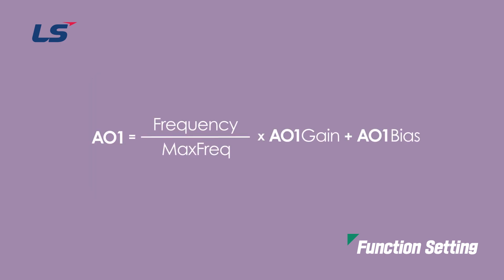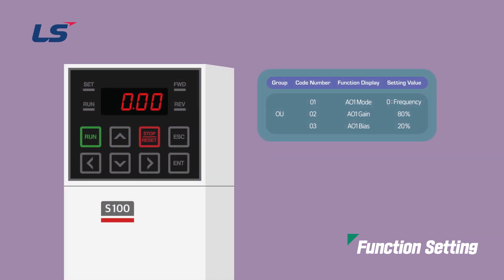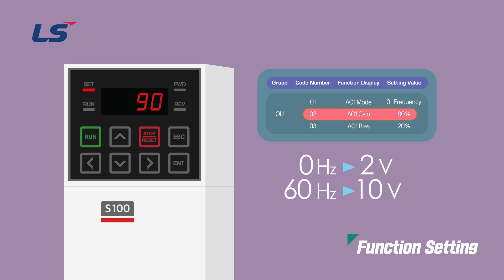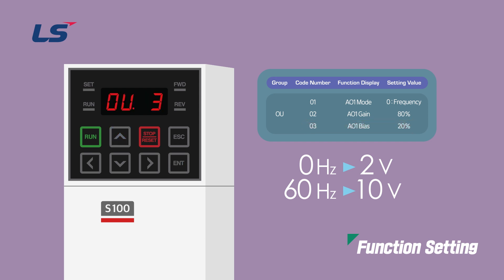Gain and bias are reflected in the output according to the formula shown on the screen. Next, we will learn how to monitor the current frequency through 2 to 10 volts output using the keypad. We will set it to output 2 volts at 0 Hz and 10 volts at 60 Hz. First, move to the OU group. Set frequency 0 in AO1 mode 1. Set the gain value for analog output to 80% in OU group number 2, AO1 gain. Set the bias value for analog output to 20% in OU group number 3, AO1 bias.